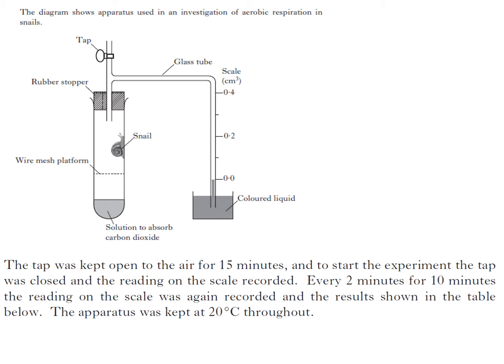So context - this is still the same whether it's an experimental design question or whether it's a data handling question. The first thing you have to do is figure out what information you actually have. You've got a diagram showing apparatus used in investigation of aerobic respiration. You should recognise that apparatus because it's the same stuff you had at Nat 5. The tap was kept open to the air for 15 minutes and to start the experiment, the tap was closed and the reading on the scale recorded every 2 minutes for 10 minutes. You're told the temperature it was kept at as well.